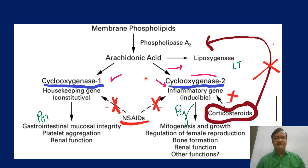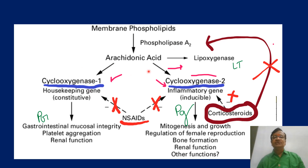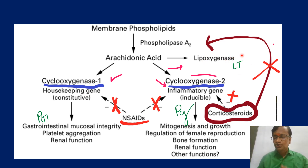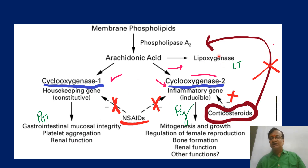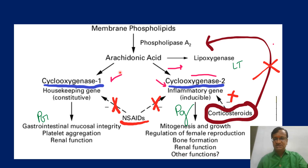The arachidonic acid also feeds into the lipoxygenase pathway. When COX is inhibited, more arachidonic acid goes through the lipoxygenase pathway, increasing leukotrienes and causing bronchospasm. This explains the four principal NSAID side effects: gastrointestinal mucosal problems, platelet aggregation issues, renal dysfunction, and bronchospasm due to increased lipoxygenase activity.